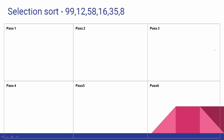So how many iterations are needed? The total number of passes is equal to the number of elements. So if there are 6 elements, it will be 6 passes.